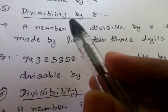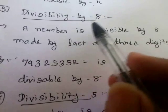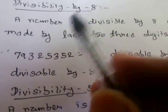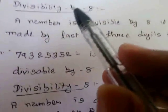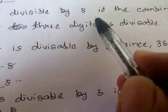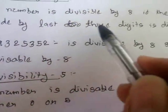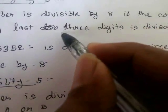A similar rule applies to check if a number is divisible by 8. A number is divisible by 8 if the combination made by the last three digits is divisible by 8.